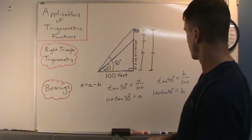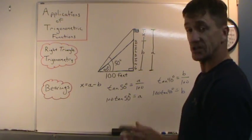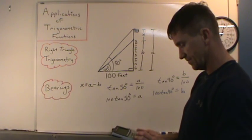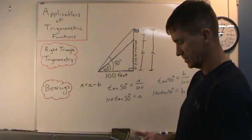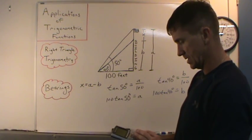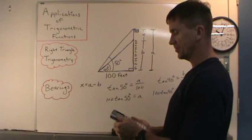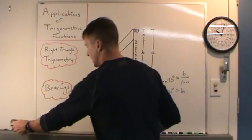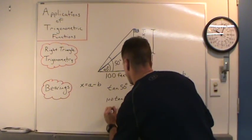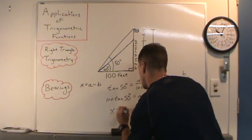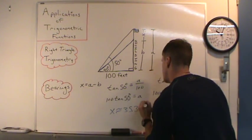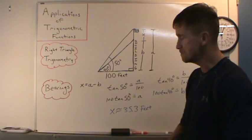So x equals a minus b. Make sure your calculator's in degree mode. 100 tangent of 50, close the parentheses, subtract 100 tangent of 40, and I get about 35.3 feet. So x is roughly 35.3 feet — the height of the flag.